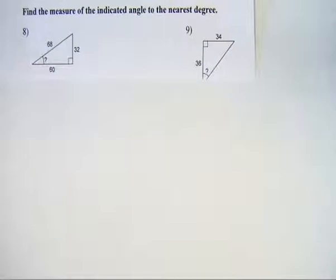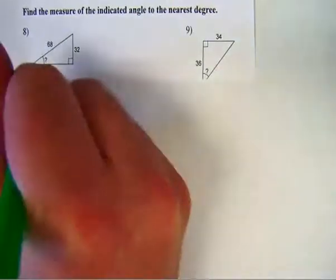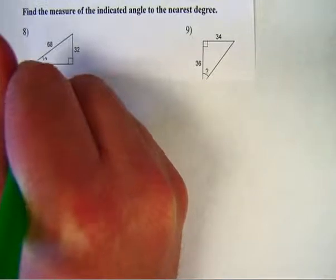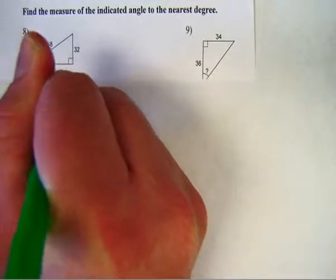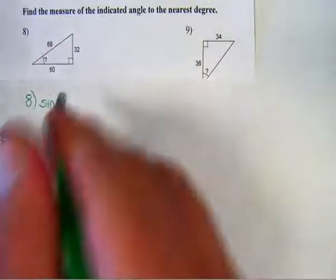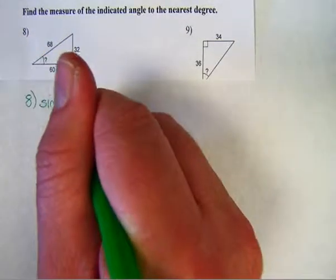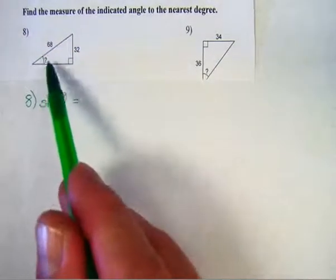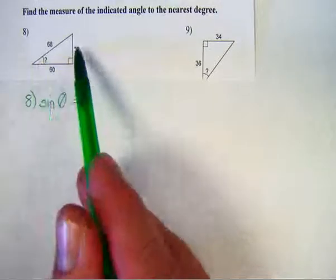So that means I'm free to use any of the trig functions that I want. I'm kind of partial to the sine function myself. So I'll say that the sine of theta, and we don't know what theta is, we're not sure. The sine of theta is equal to, well, sine is opposite over hypotenuse.